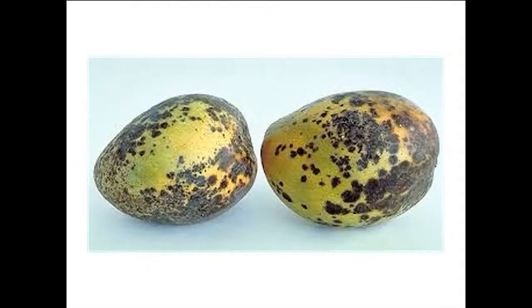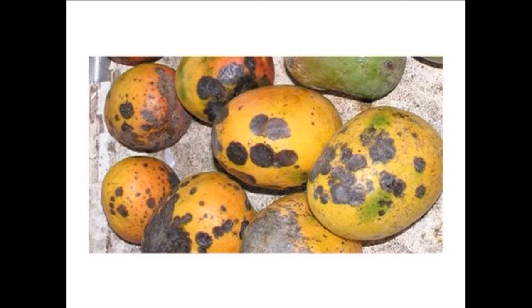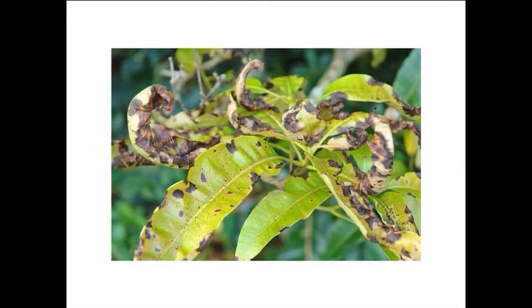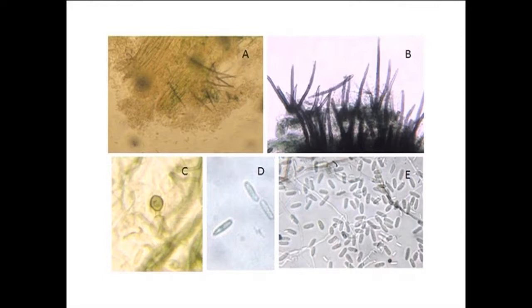The fungus produces acervuli which develop on diseased parts of the plant. They are irregular and appear as brown to black dots. Setae are common on twigs but not on fruits. The acervuli, when mature, exude pink masses of conidia under moist conditions. Marginal setae are rare. Conidia are borne on hyaline conidiophores, are straight, cylindrical or oval, hyaline with two oil drops, and non-septate with round ends.